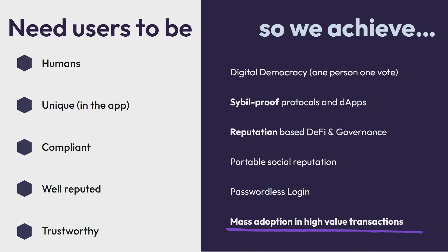Web3 has been promising these use cases for a long time — think about democracies, high-value transactions, portable reputation, a single global identity. All these promises require that we have that trust. We see the lack of trust in the user, or the inability to produce this trust, as the main blocker for many use cases in Ethereum and in the blockchain generally. Scalability was the first thing to solve for mass adoption, but now we have the base layer — a working global computer. The next stage is certainly identity.